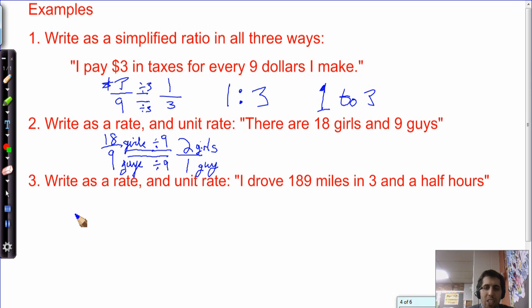Last one. Write as a rate and a unit rate. I drove 189 miles in 3 and a half hours. So 189 miles divided by 3 and a half hours. And let's write it as a decimal. What's the unit rate? How fast did I travel, or how far did I go in 1 hour? And we'll divide numerator and denominator by 3 and a half.